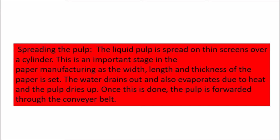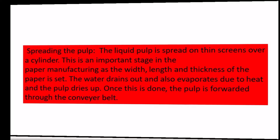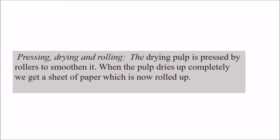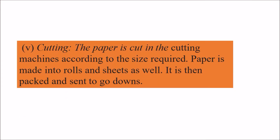The fourth stage is pressing, drying, and rolling. The drying pulp is pressed by rollers to smoothen it. Once the pulp dries up completely, we get a sheet of paper which is then rolled up. The final stage is cutting — it is made into rolls and sheets based on the required sizes and sent to the go-downs for supply.